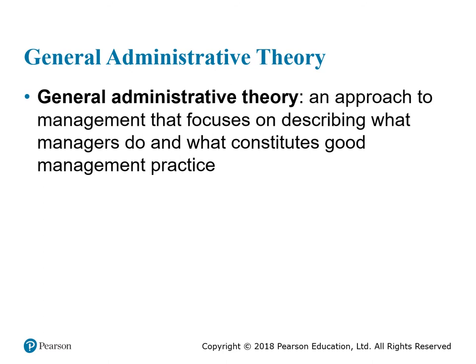Another school of thought on management is the general administrative theory — an approach that focuses on describing what managers do and what makes up good management practice. Different scholars and scientists said a good manager should be able to do certain things, and a bad manager has certain other characteristics. The general administrative theory is basically a description of what managers should do, what makes a good manager, and what managers should avoid. It didn't follow principles or any particular science — it's essentially thoughts of different people put together.